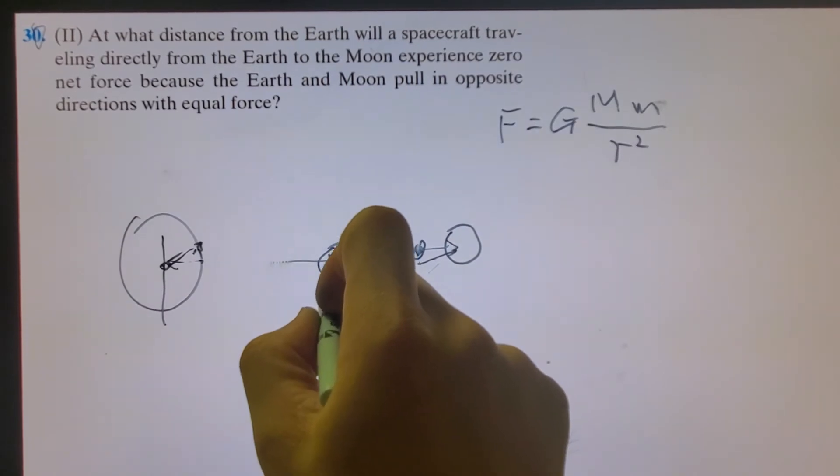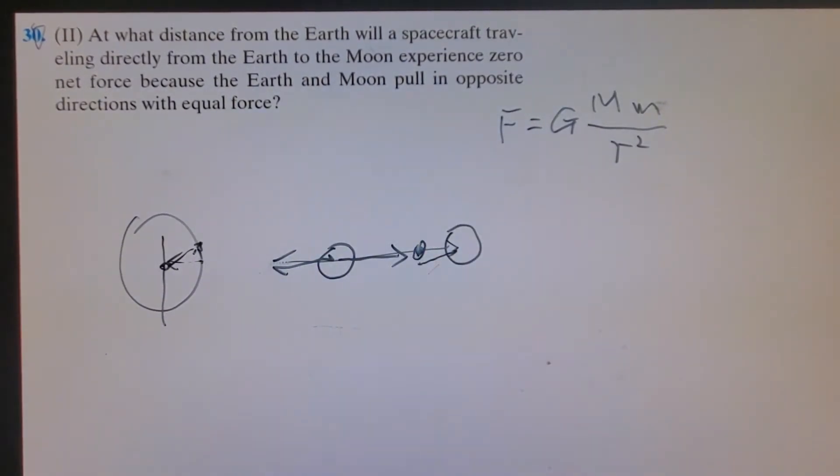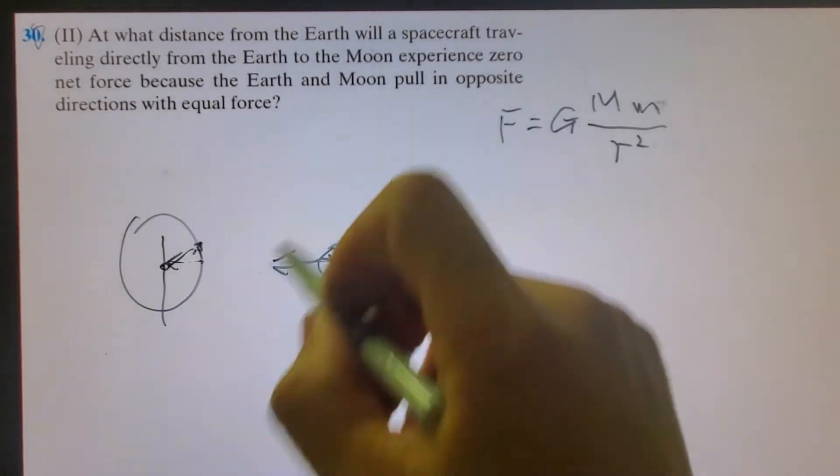How to balance? Because the force pulling by the Earth will be equal to the force pulling by the moon. So let's see at which distance that will happen.